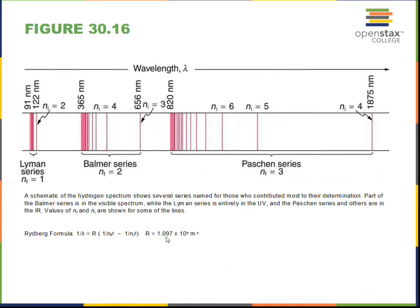This is one over the wavelength equals the Rydberg constant times the quantity 1 divided by n final squared minus 1 divided by n initial squared. The Rydberg constant is 1.097 times 10 to the seventh with inverse meters for its units. You should memorize that Paschen is in the infrared, Balmer is in the visible, and the Lyman series is in the ultraviolet.